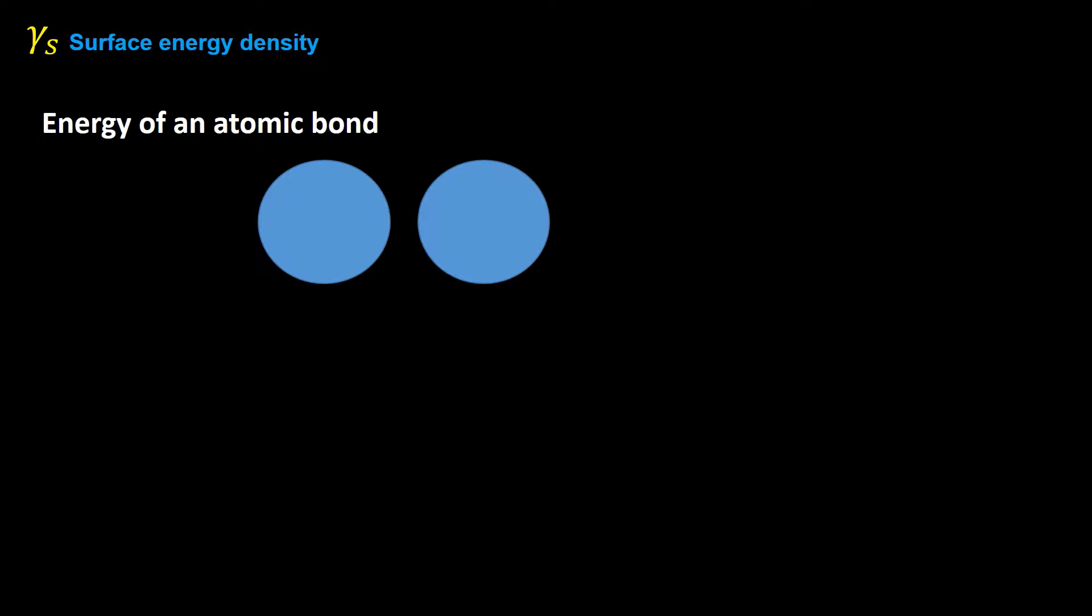Where E is the Young's modulus of the material and gamma S is the surface energy density of the material. Let's investigate in details. What is surface energy density? For this purpose, at first energy of an atomic bond is explained. Imagine two atoms of a solid. There is an equilibrium spacing distance between them. At this distance, there is no net force between them. Now imagine we pull away one of atoms from its neighbor. The x-axis represents the displacement of the atom. The y-axis shows required force.